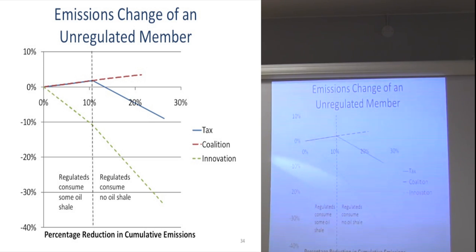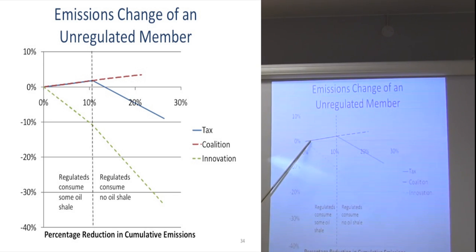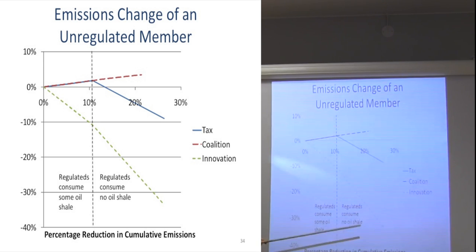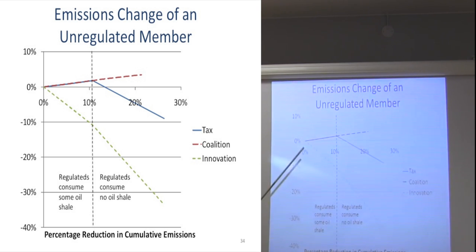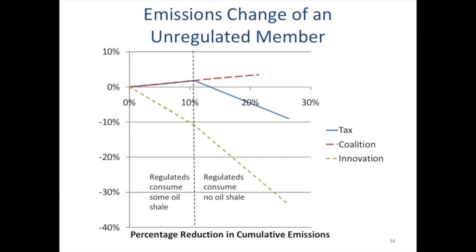To cast this in the leakage framing: this is our target for percentage reduction in cumulative emissions. If you're using a tax or increasing the share of the world that's regulated with an emissions tax, you do see positive leakage, growing up until the point where the regulators are skipping the last pool. Then you see leakage starting to decline for the tax, but for the coalition it continues to go up. Innovation, on the other hand, always has negative leakage because it always gets the unregulated to switch sooner to the clean backstop and consume less of the last resource pool.